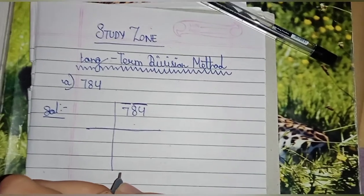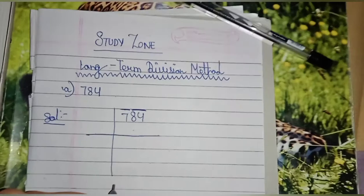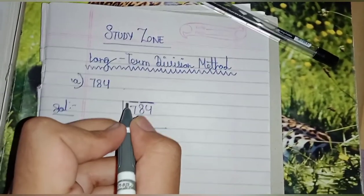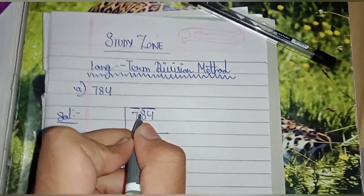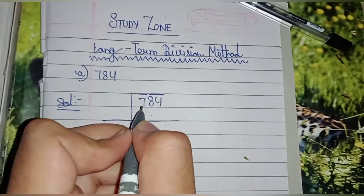So here the first period is 7. You have to think of that number whose square is equal to or less than this number. We know that if we do 7×7, it will be 49, which is more than 7.